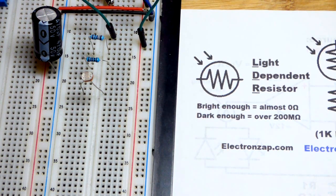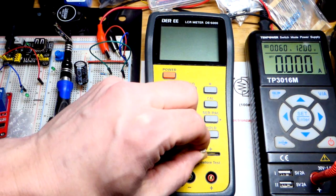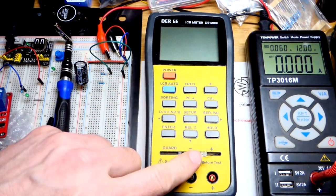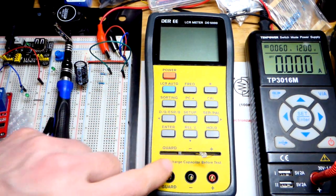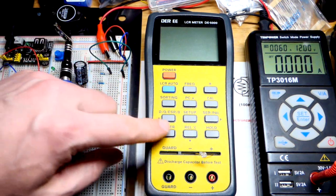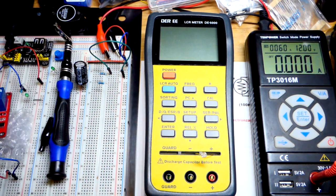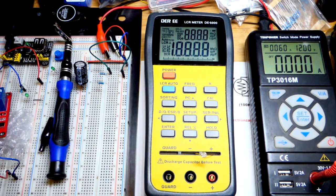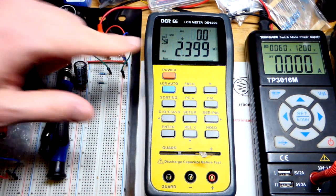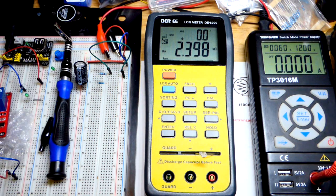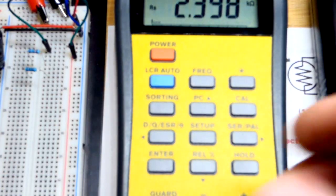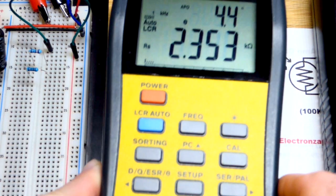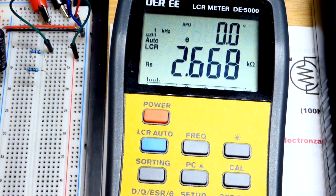This is an LCR meter. I'm just going to put the light dependent resistor in there. It's not polarized, we don't have to worry about plus and minus. You turn the power on and it automatically figures out basically the main electrical property whether it is resistive, inductive, or capacitive and there you can see we got 2.7 kilo ohms of resistance right there.